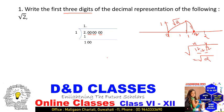Now double the 1 we found - 1 times 2 gives 2. Place a dash next to it and find what digit multiplied with 2-something gives a result just under 100. If you multiply by 5, then 25 times 5 is 125, which is greater than 100. So take 4: 24 times 4 is 96. Subtract to get remainder 4.